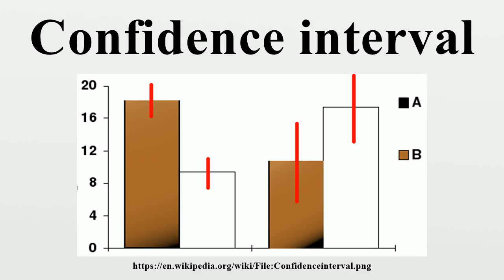For example, a confidence interval can be used to describe how reliable survey results are. In a poll of election voting intentions, the result might be that 40% of respondents intend to vote for a certain party. A 99% confidence interval for the proportion in the whole population having the same intention might be 30% to 50%. From the same data one may calculate a 90% confidence interval, which in this case might be 37% to 43%. A major factor determining the length of a confidence interval is the size of the sample used in the estimation procedure.